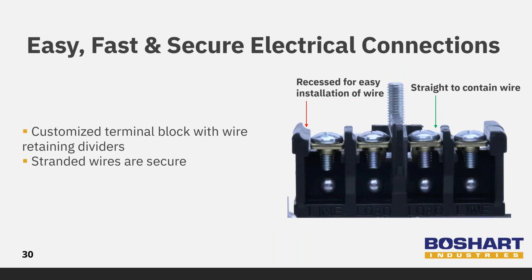Beauchart has terminal block dividers which retain the wire under the screw head on the right hand side of each terminal screw. The divider helps stranded wires remain secure under the screw head when the screw is tightened and ensures a good electrical connection. Contractors like this feature because it saves time. Solid conductors can be stripped and inserted under the right hand side without having to bend the wire into a u-shape to wrap around the terminal screw. Simply insert and tighten without having the wire pop out.